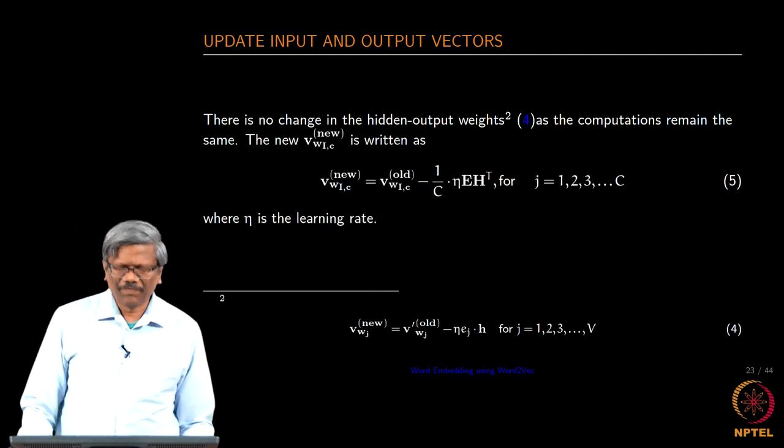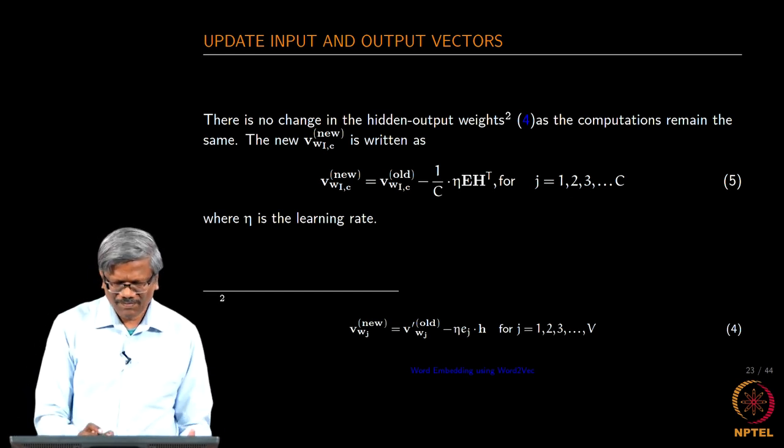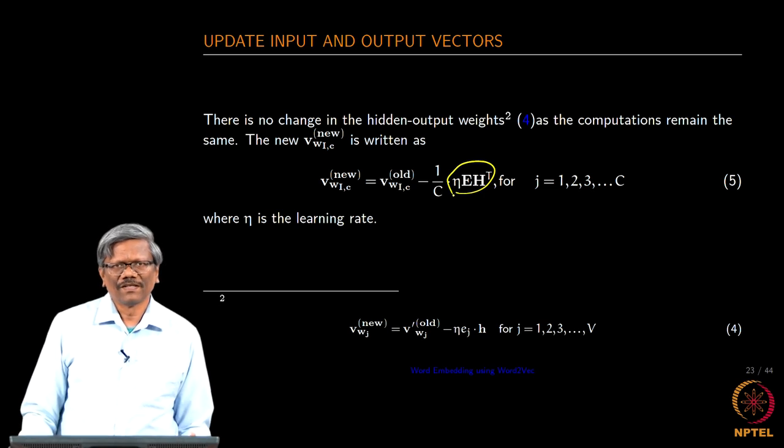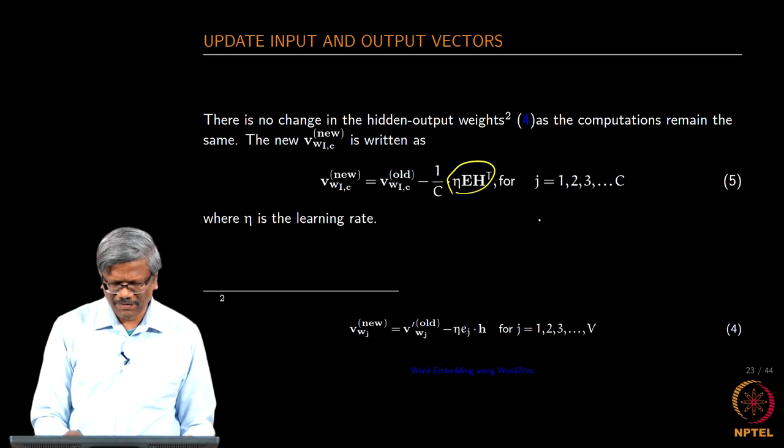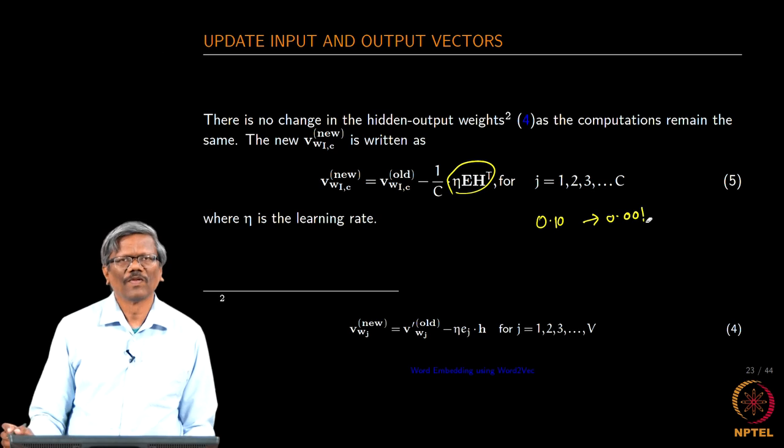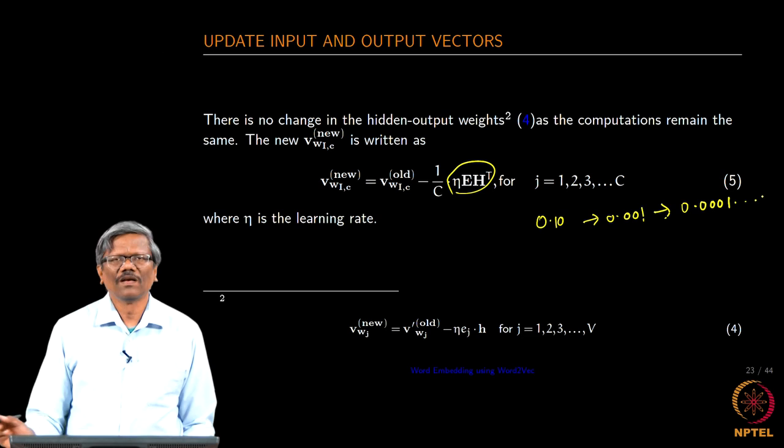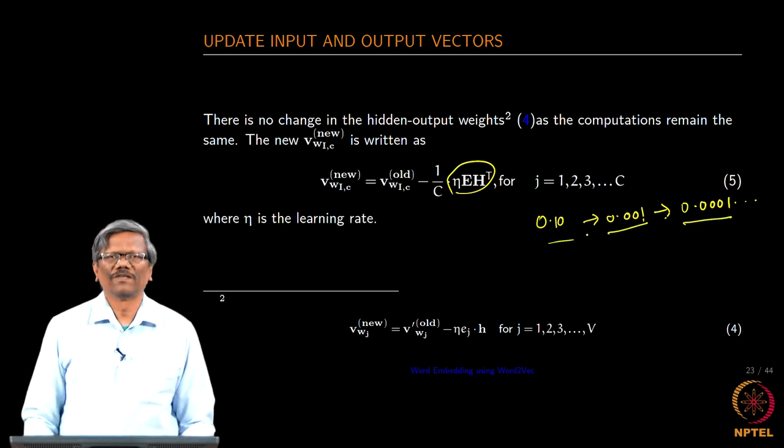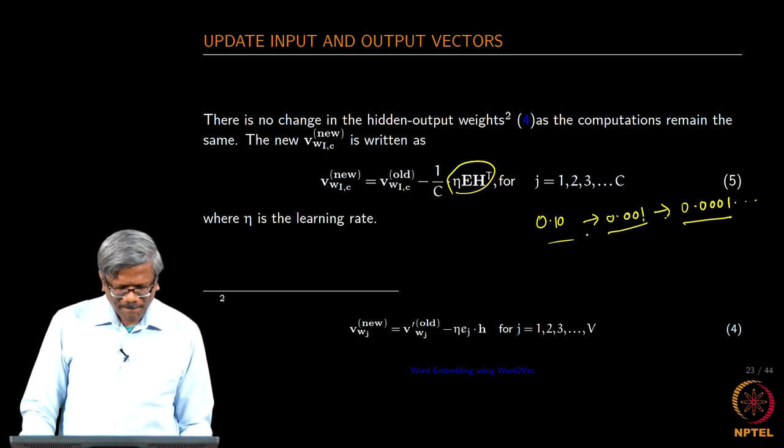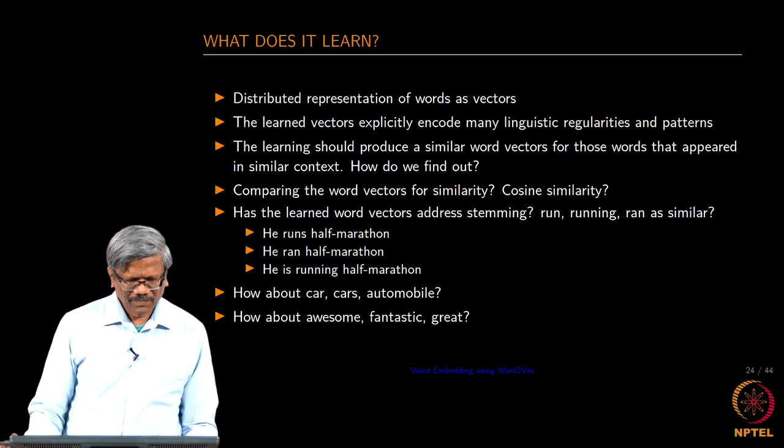Again if you look at the updation of weights based on the error there is no change correct and then eta is our learning parameter which varies from 0.1 to 0.001 or sometimes it could be and so on. You have to really choose this value to suit your need alright.